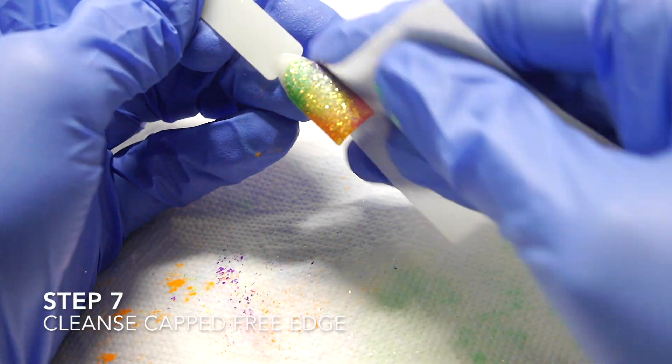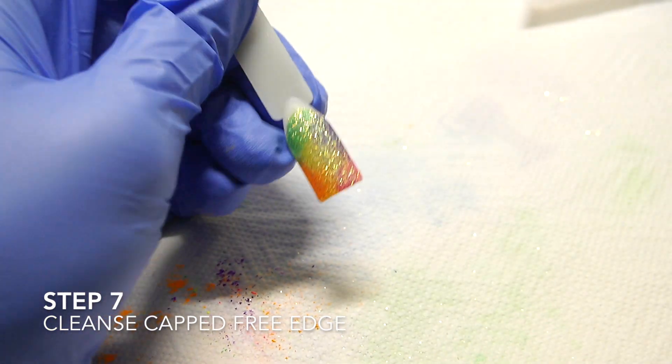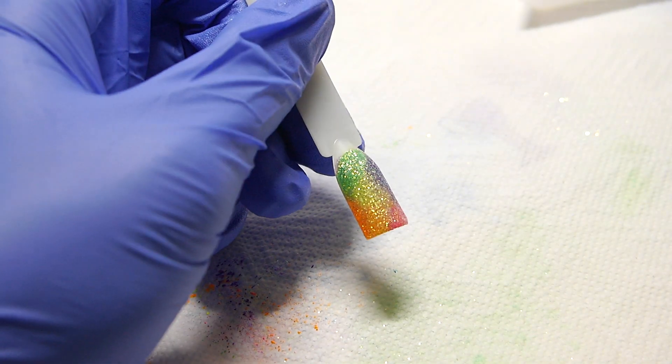The area just cured will need a cleanse to remove the inhibition layer and your sugared pigment nail is complete.